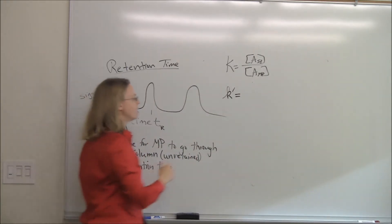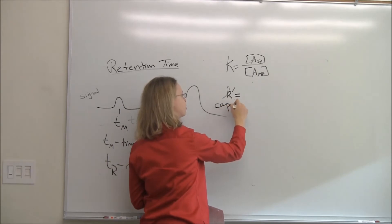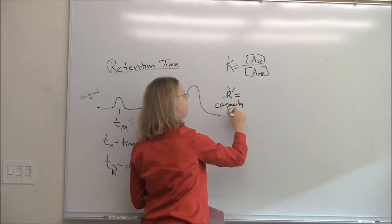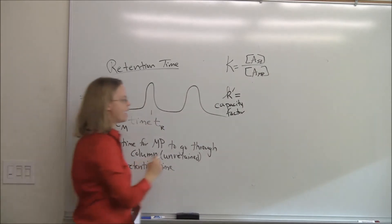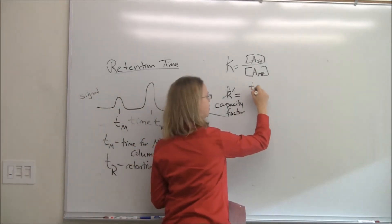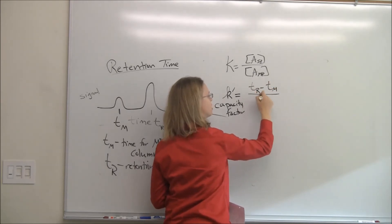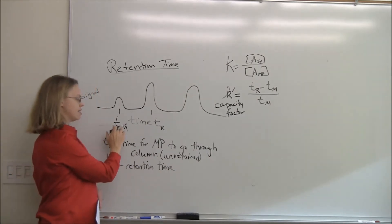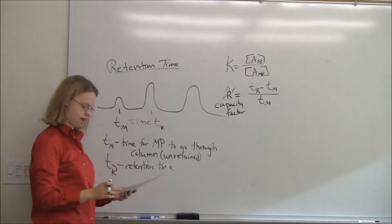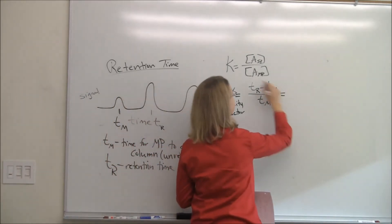K-prime is usually called the capacity factor. We can get it from the chromatogram. It's equal to (T-sub-R minus T-sub-M) divided by T-sub-M — so we subtract out the mobile phase time and then divide by it.